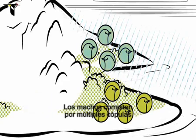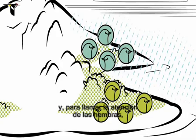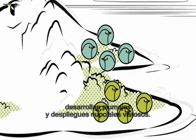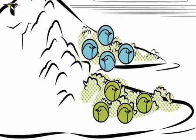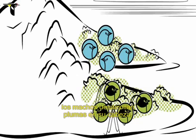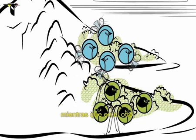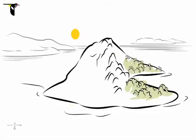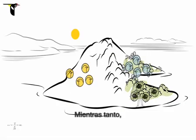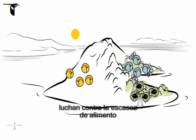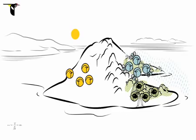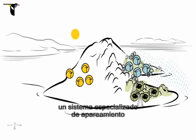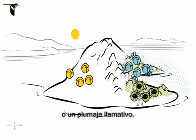Males compete for multiple mates and, to get noticed, evolve fancy plumage and display behaviors. On one side of the valley, the males evolve elaborate head plumes, and on the other, it's the tails that get fancy. At the same time, western birds are consistently dealing with harsher food conditions and do not evolve a specialized mating system or fancy feathers.